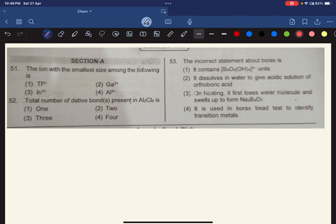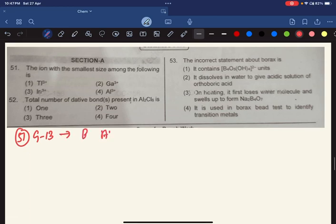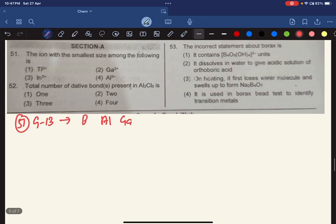Group 13 proteins. The ion with smallest size among the following. Now you have group 13. Question number 51. Group 13: Boron, Aluminium, Gallium, Indium and Thallium. And which statement is plus 3 oxidation state.